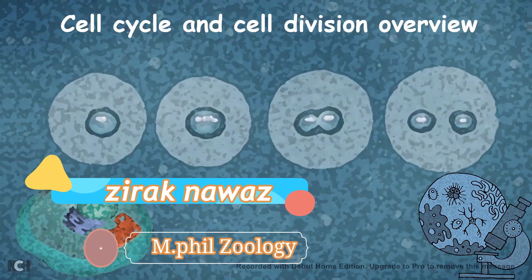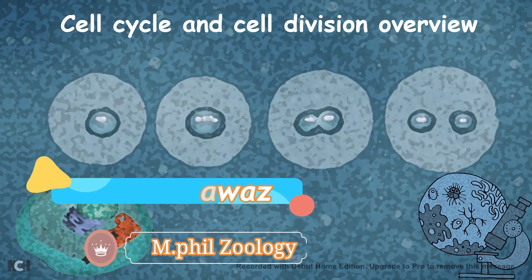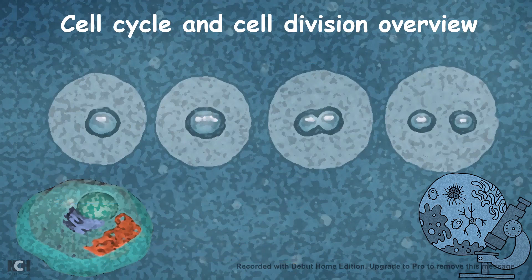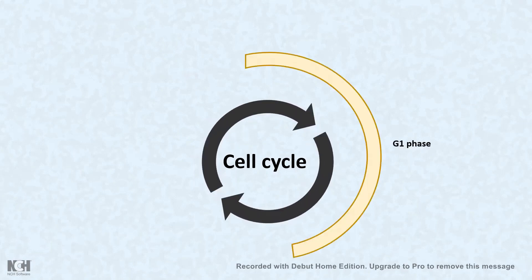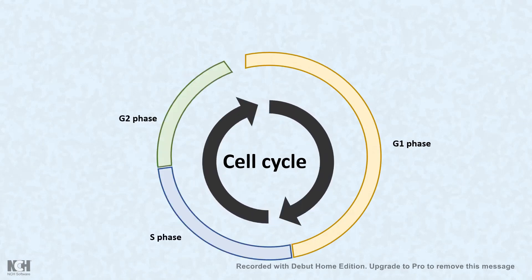Hi, in this video we will have a quick overview of cell cycle and the cell division process. Let's talk about the cell cycle first. The cell cycle is divided into several phases: G1, S, G2, and the mitotic phase. Each of these phases has different durations. For example, G1 is the longest whereas mitotic phase is the shortest.